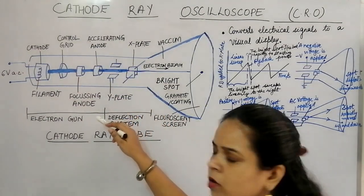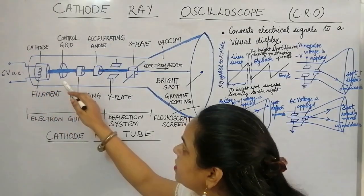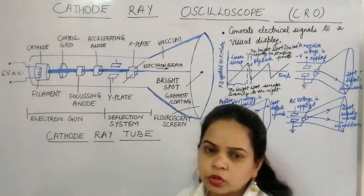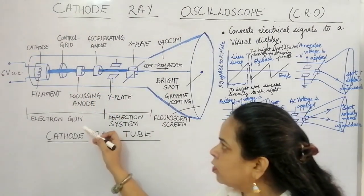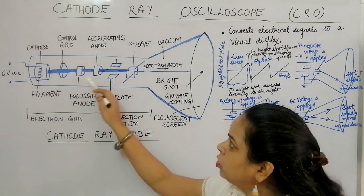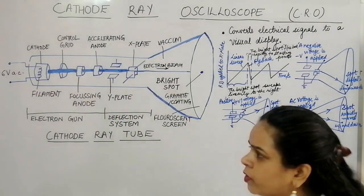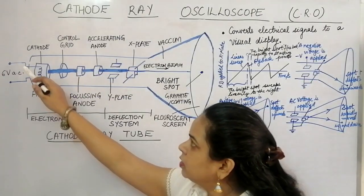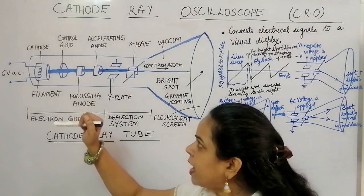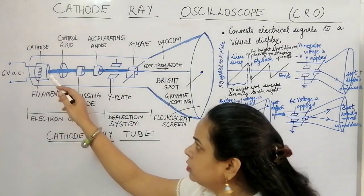The electron gun consists of the cathode which contains the filament, the control grid, and two cylindrical anode drums. The constituents of the electron gun are the filament within the cathode, the control grid, and the two anodes: the focusing anode and the accelerating anode. The filament heats up and the electron beam is liberated from the cathode due to the metal ion coating.